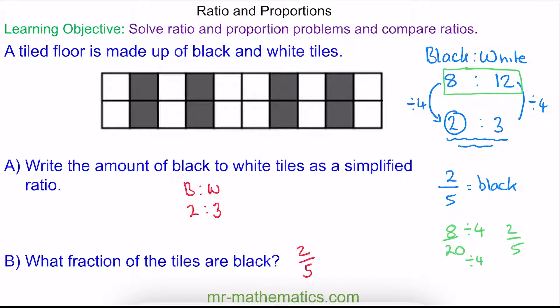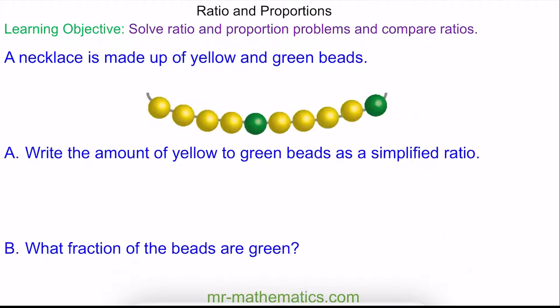Let's try another question. Here we have a necklace made up of yellow and green beads. Try to write a simplified ratio of yellow to green beads, and then write the fraction of the beads which are green. You can pause the video and resume it when you're ready.